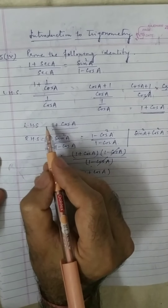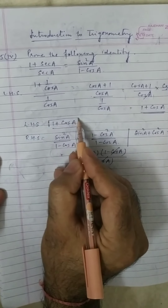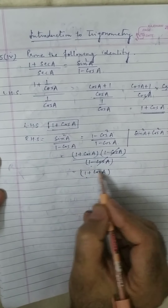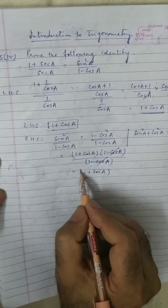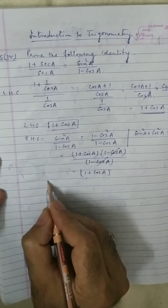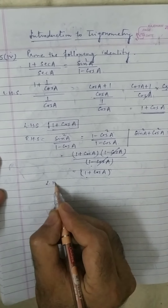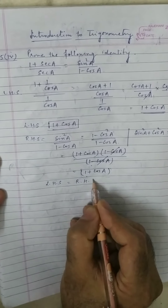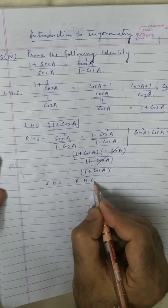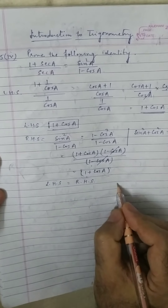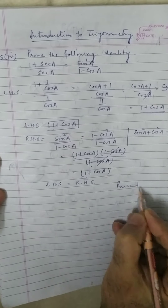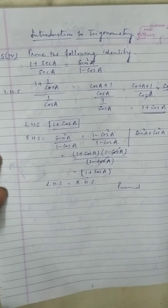Now the left hand side is also 1 plus cos a, and the right hand side is also 1 plus cos a. So left hand side equals right hand side, and our identity is proved.